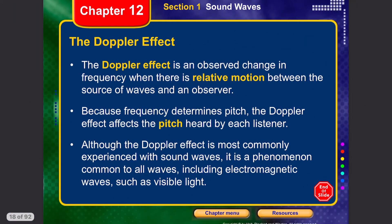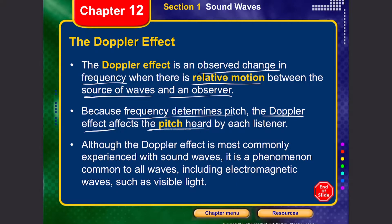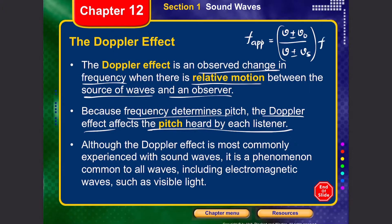The Doppler effect is an observed change in frequency when there is relative motion between the source of a wave and an observer. Because frequency determines pitch, the Doppler effect changes the pitch heard by the listener. The apparent frequency is given by: f′ = ((v ± v₀) / (v ± vₛ)) × f, where v is the velocity of sound, v₀ is the velocity of the observer, and vₛ is the velocity of the source.